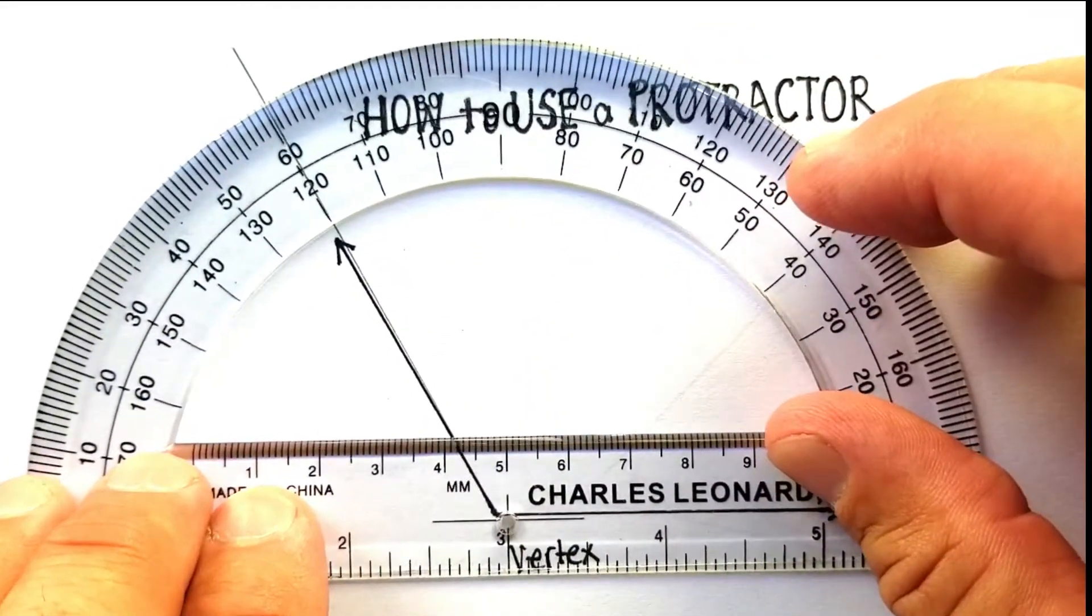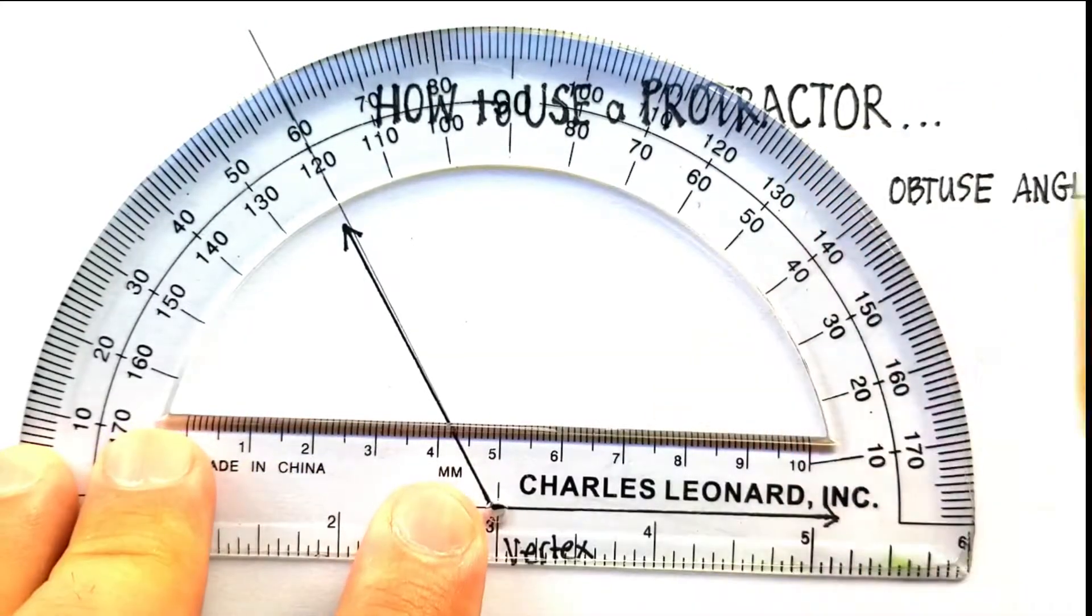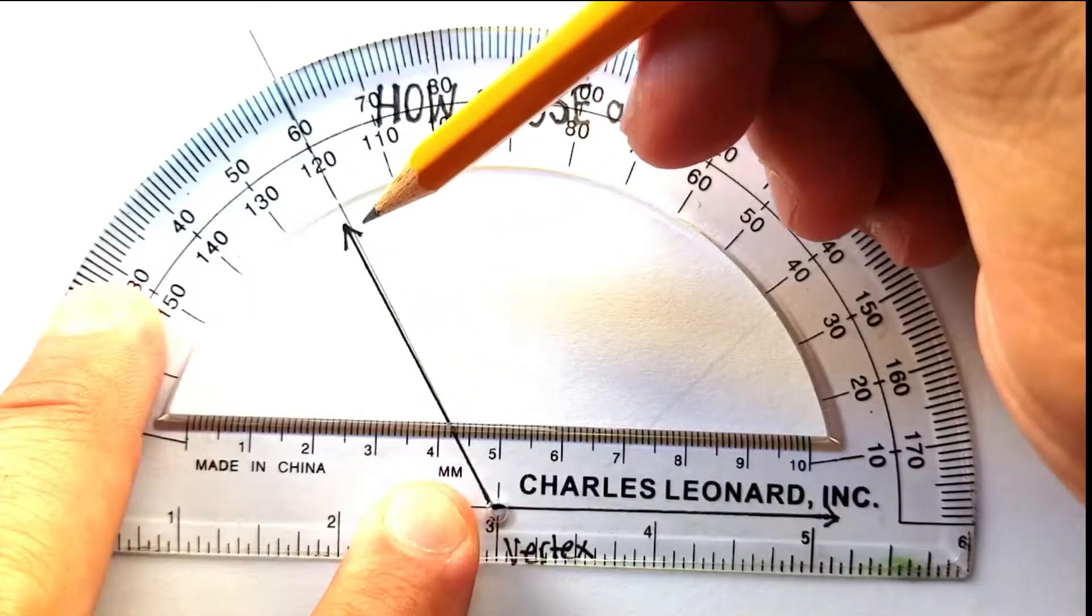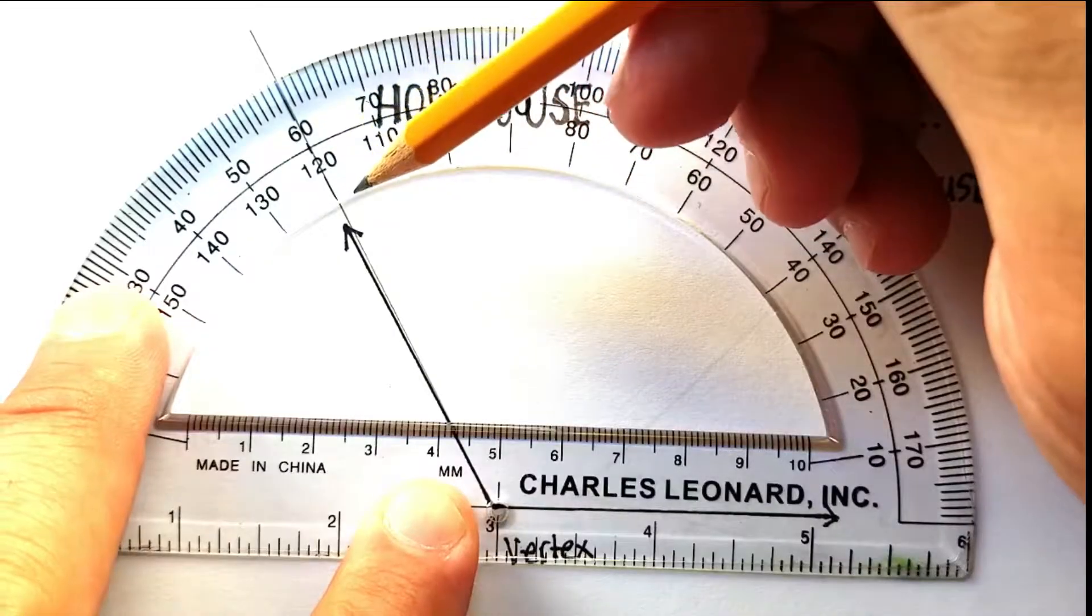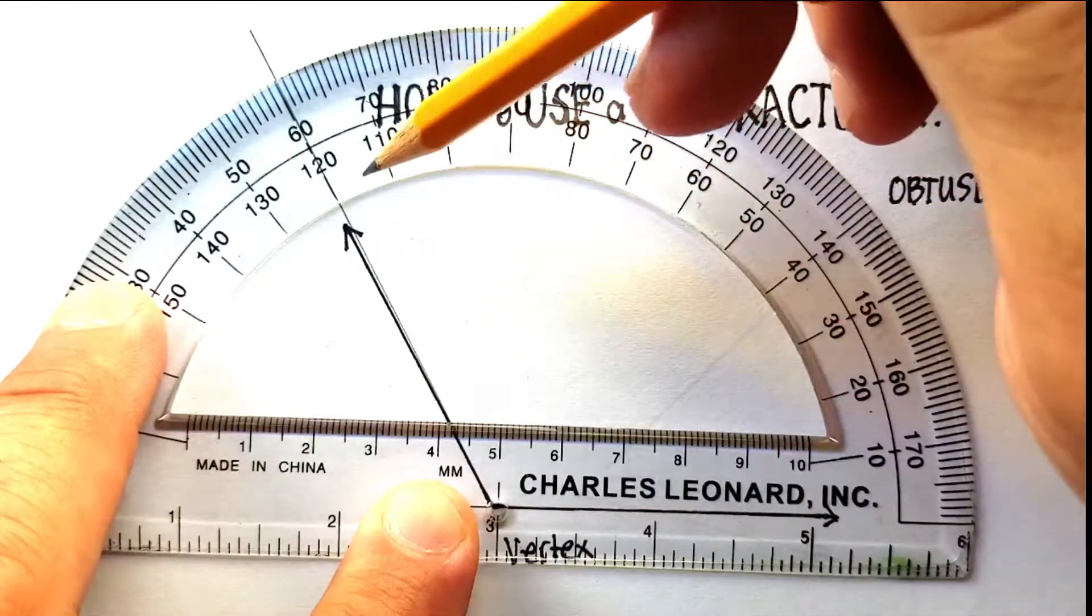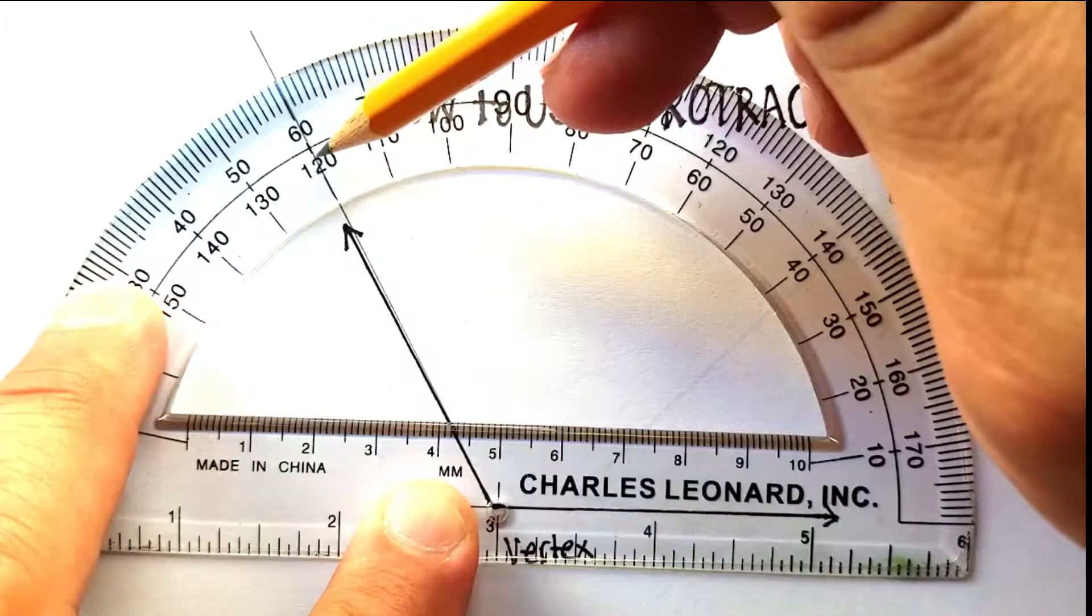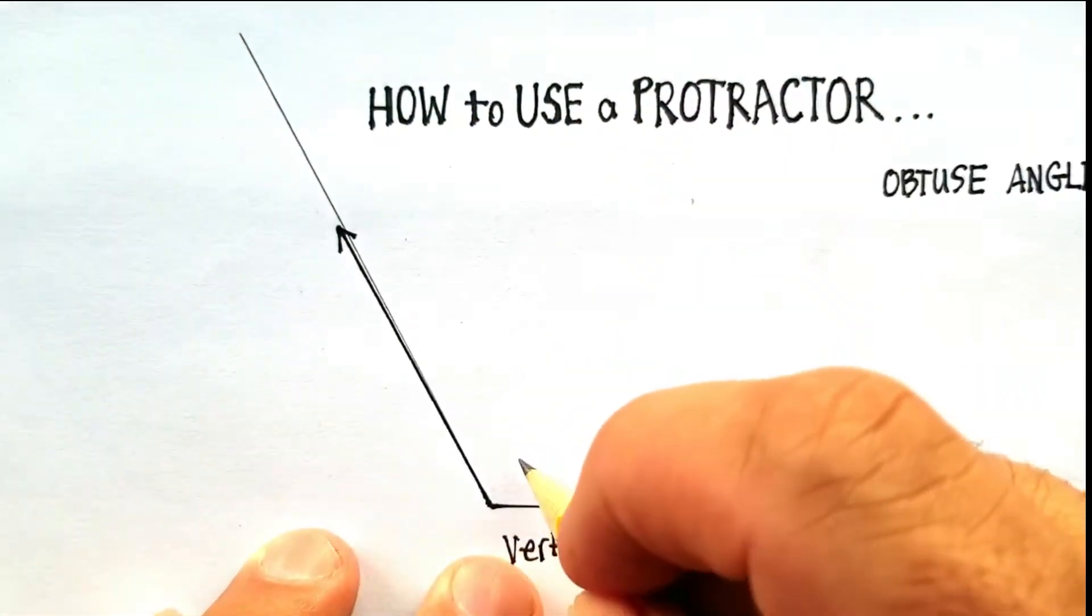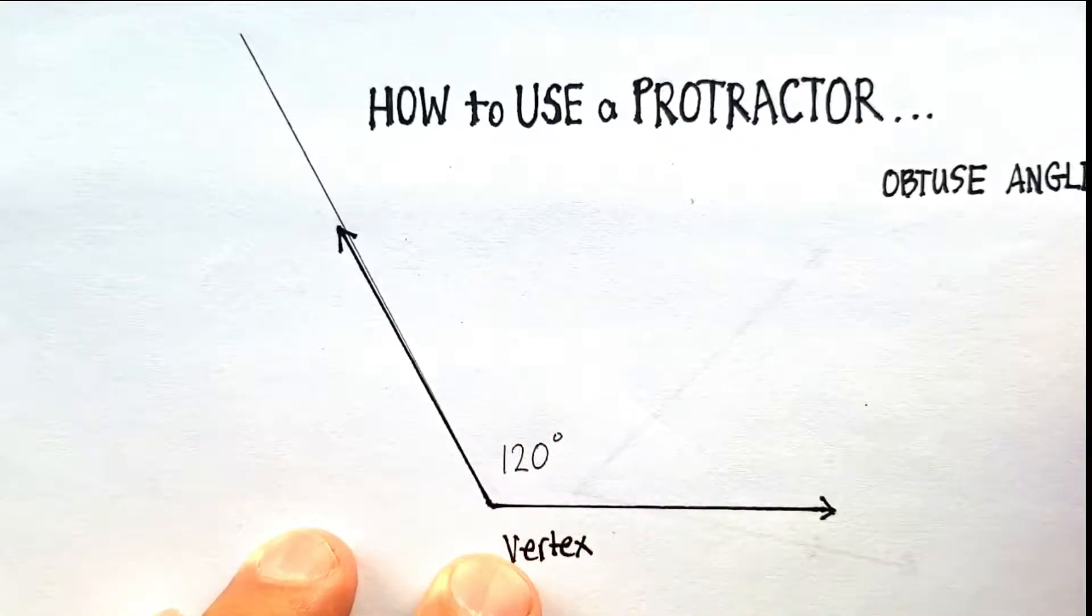Now, again, put the hole centered there on the vertex. Make sure that this line is lined up with one side of the rays. Now, you'll see that my line extends all the way through the numbers, much easier to read. Since I know this is going to be greater than 90, I'm not going to read the top part. I'm going to read the bottom part. And it looks like it's exactly at 120 degrees. So, this angle is at 120 degrees.